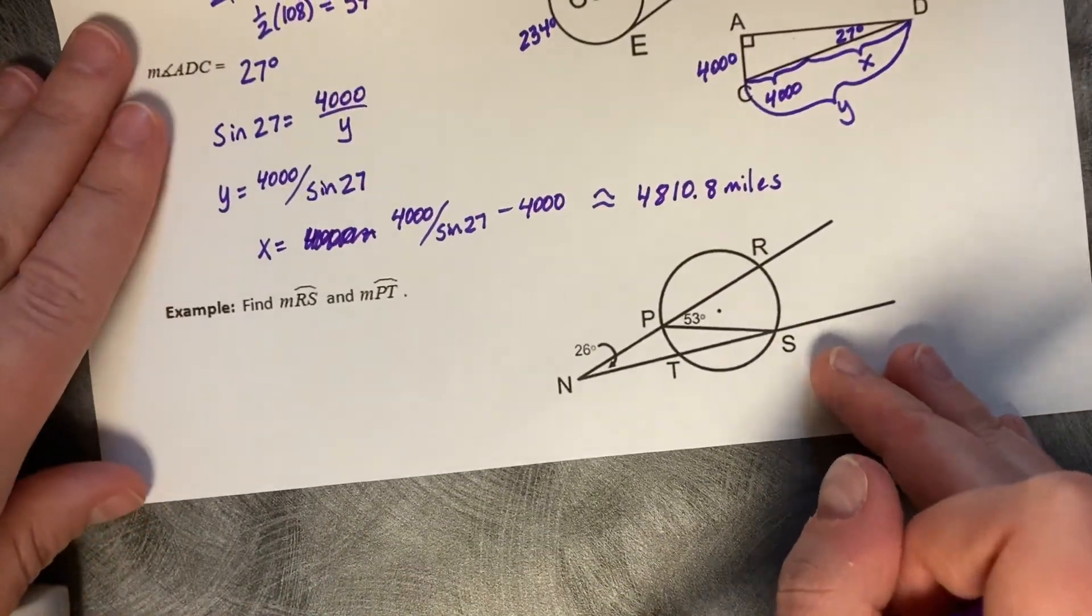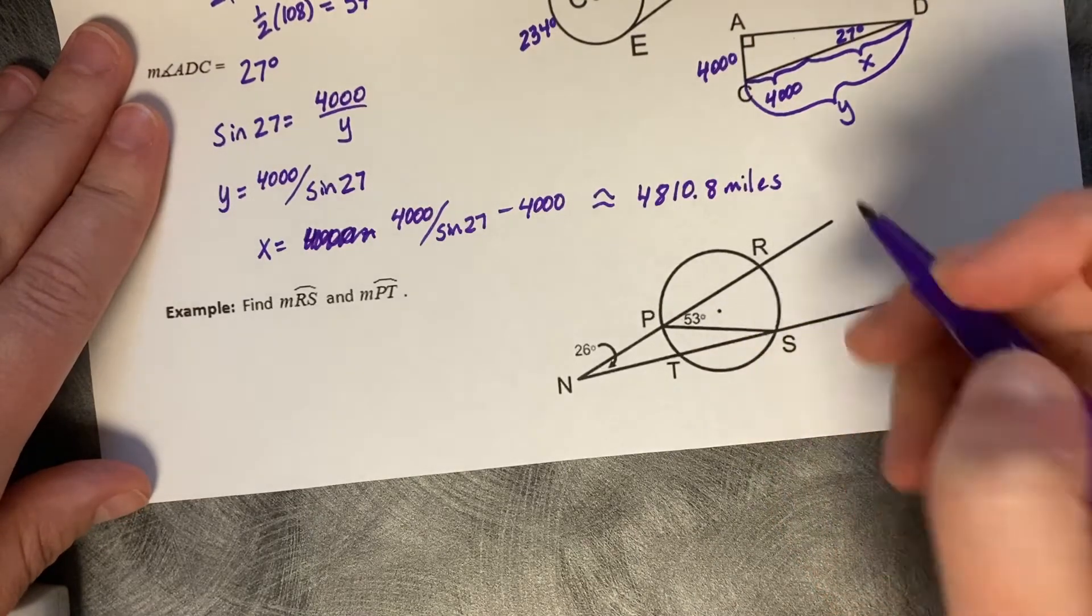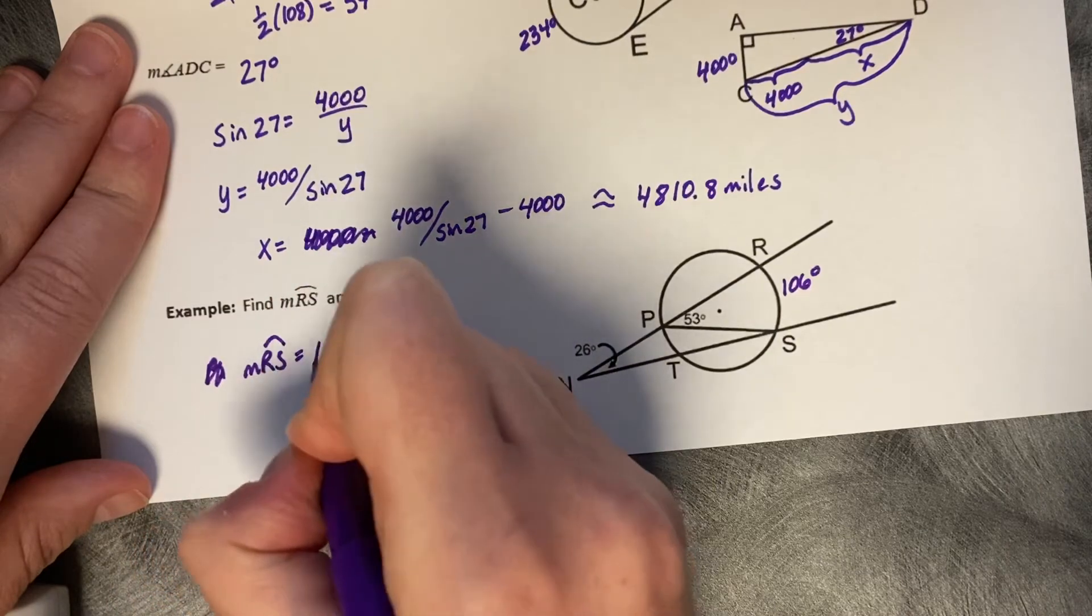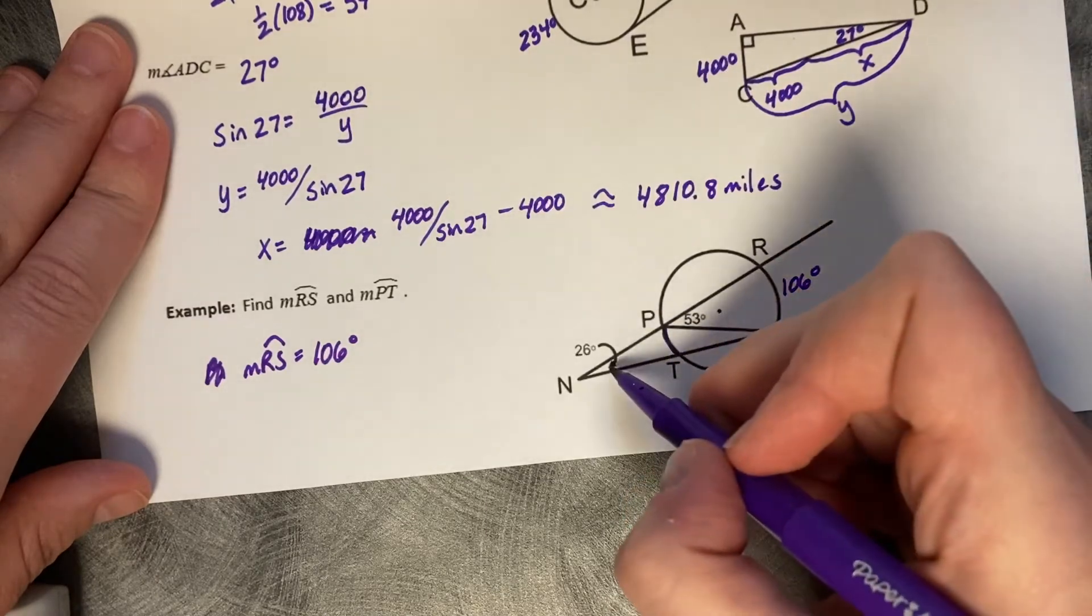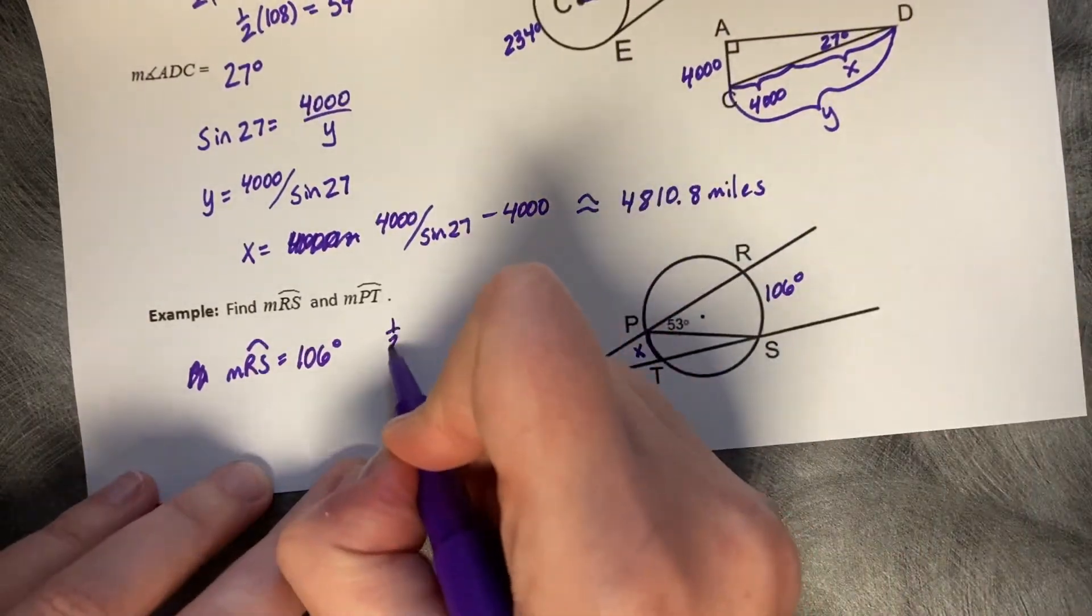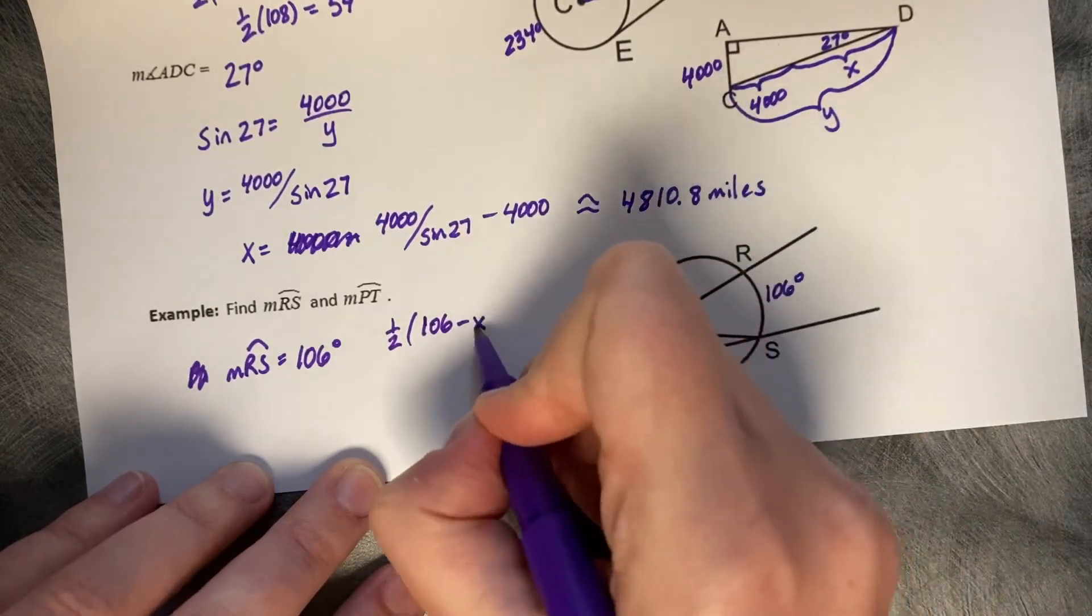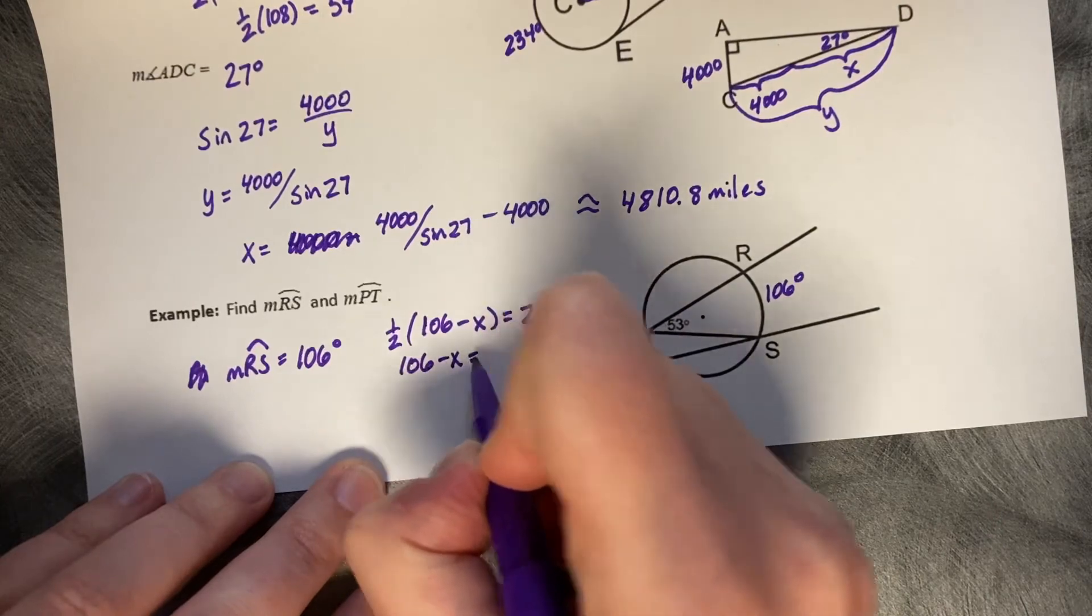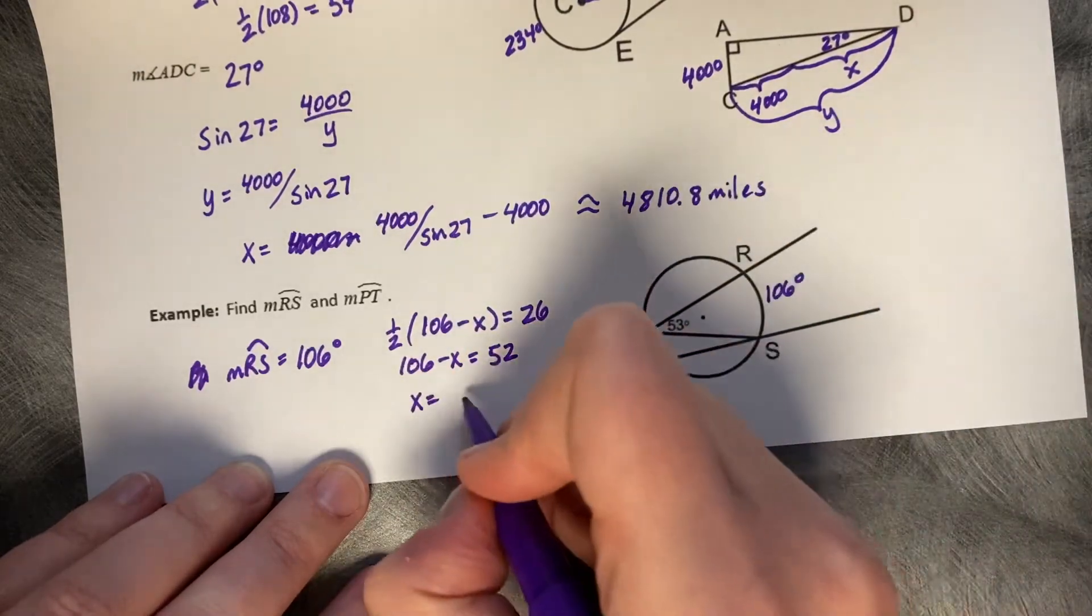Find the measure of RS and PT. So, we'd like to know the measure of RS first. Well, that corresponds to 53. So, 53 times 2 is 106 degrees. And then PT is what we'd like to know, which is unknown. But I do know an exterior angle. So, I can call this piece X and work backwards. We can say one half of 106 minus X equals 26. Let's multiply by 2. 106 minus X equals 52, minus 106 and make it positive is 54 degrees.